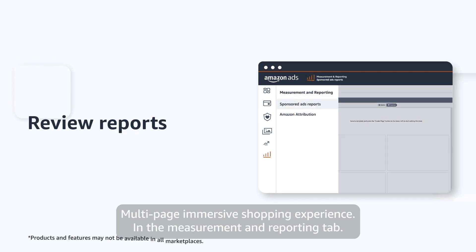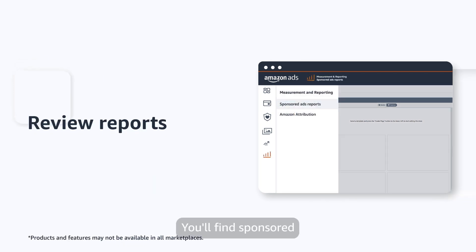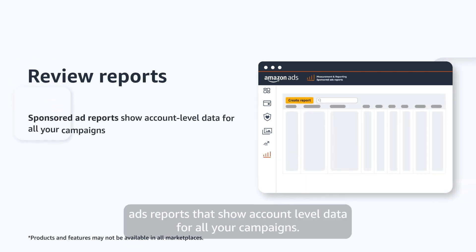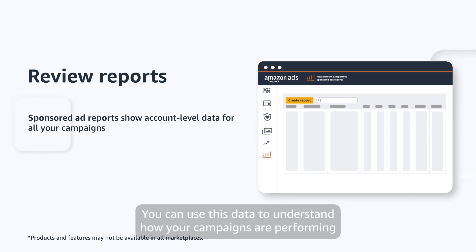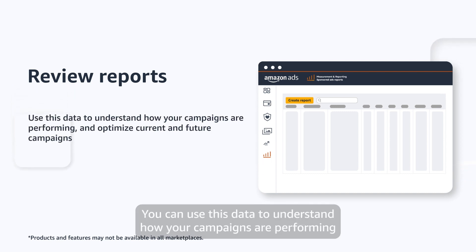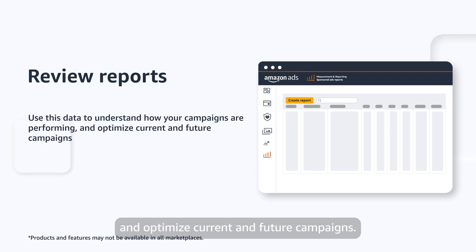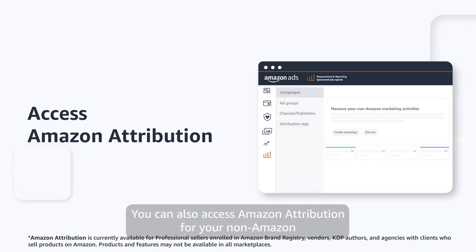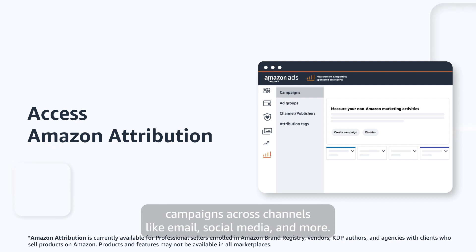In the Measurement and Reporting tab, you'll find Sponsored Ads reports that show account-level data for all your campaigns. You can use this data to understand how your campaigns are performing and optimize current and future campaigns. You can also access Amazon Attribution for your non-Amazon campaigns across channels like email, social media, and more.